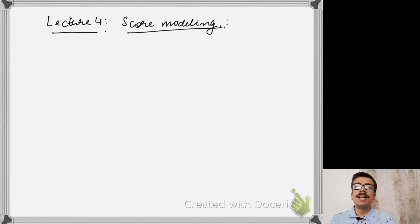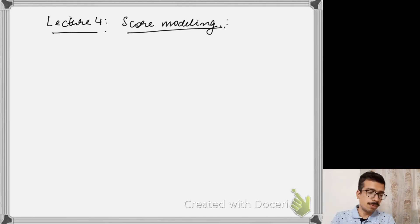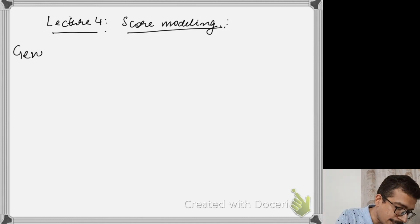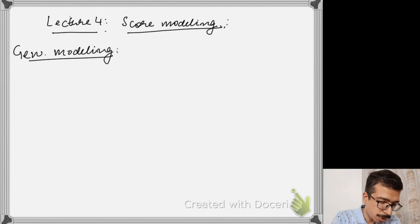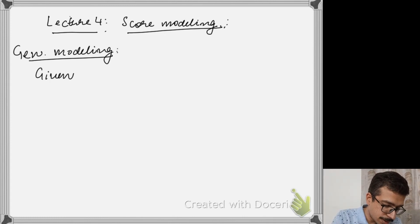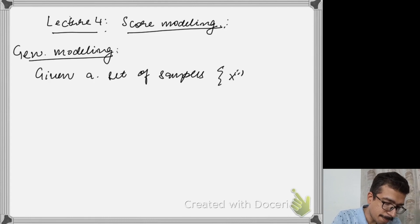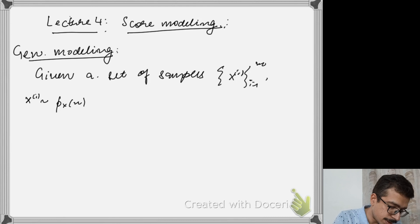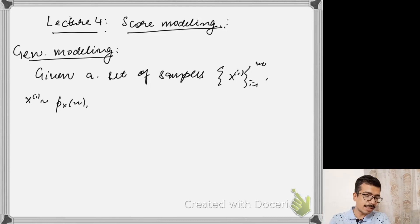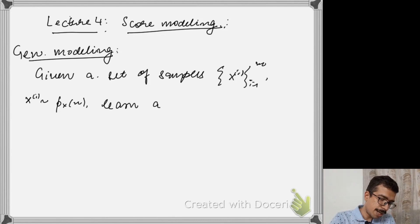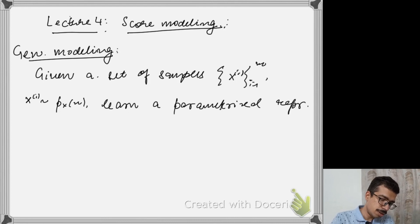Let's take a relook at the problem of generative modeling. What we have is a given set of samples x1 up to xm, with xi for i from 1 to m coming from a distribution, xi sampled from p_X(x). The goal is to learn a parameterized representation p_X(θ) to approximate p_X(x).